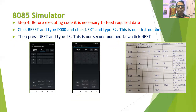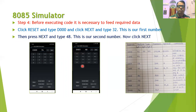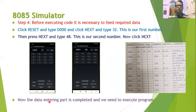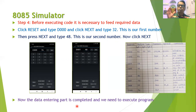You will find that at location D001, the second number 48 is stored. Once you enter 48, press Next so that the number gets stored in that memory location. Now the data entry part is complete and we are ready to execute our program. The code part and data part are both entered, and now we are in a position to execute the program.